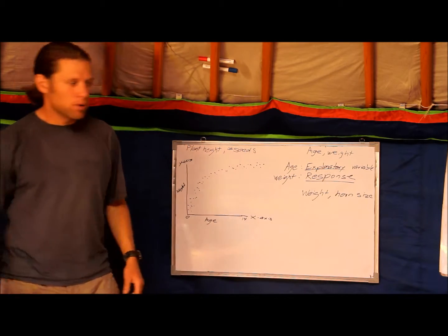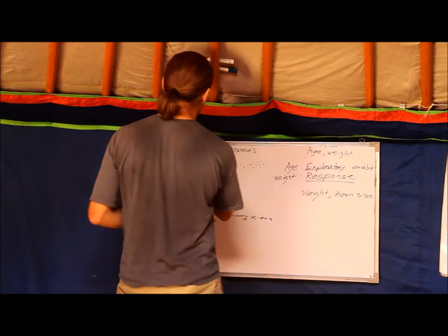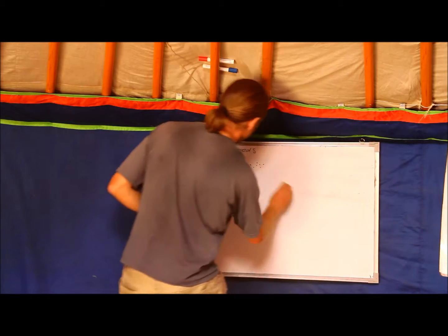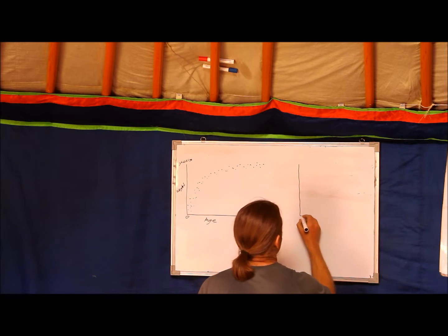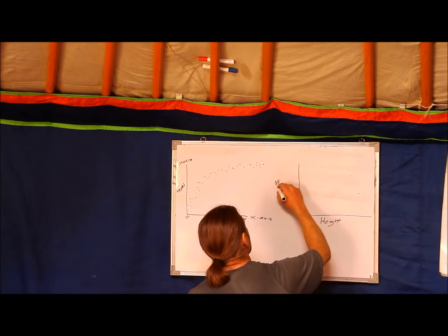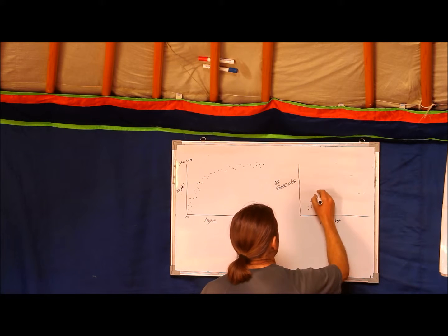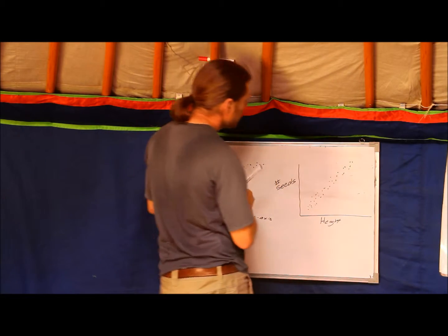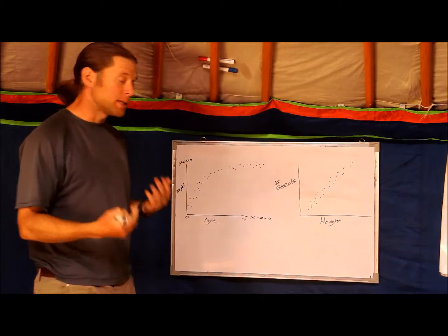So that's the first thing you want to do: if you have two quantitative variables, the first thing you want to do is just graph them out in a scatter plot.